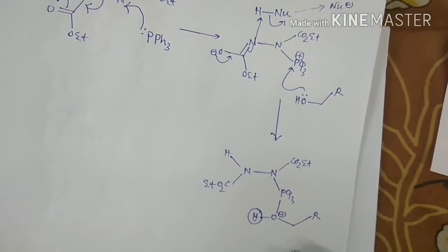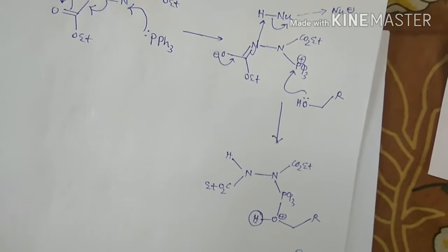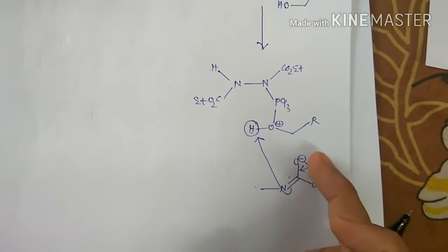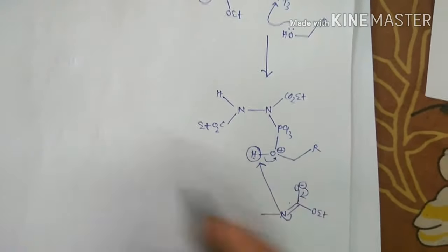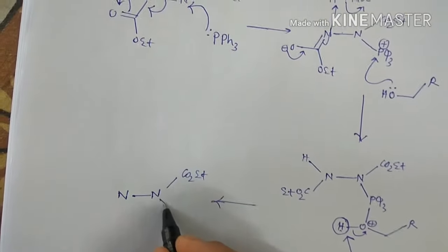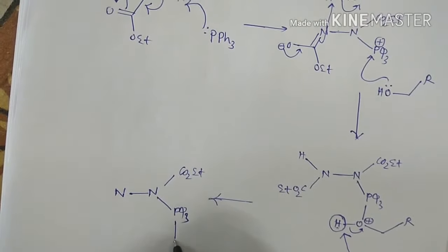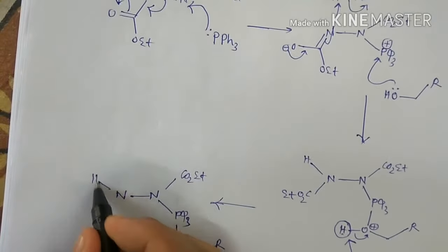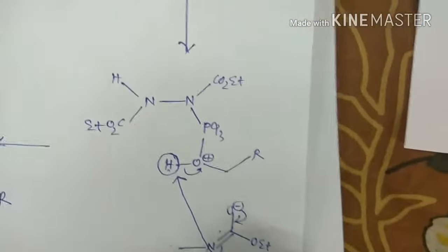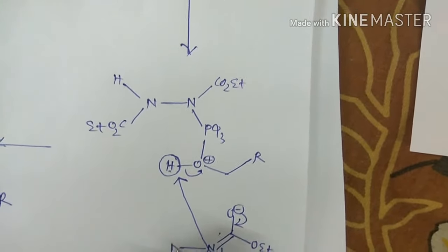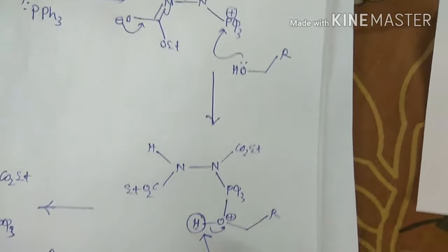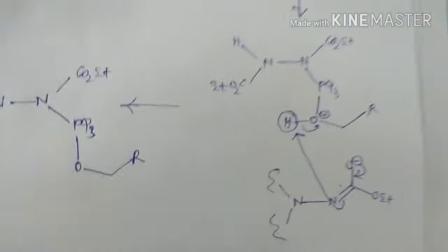Any of the nitrogen end can deprotonate this by pushing the lone pair. By pushing this negative charge, it can deprotonate this intermediate. We can represent this step, and we are not writing anything specific here because we will see it later.